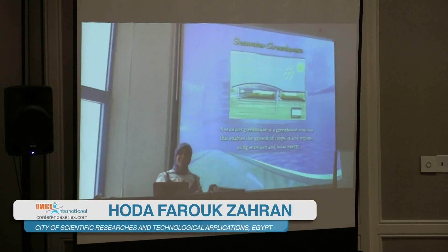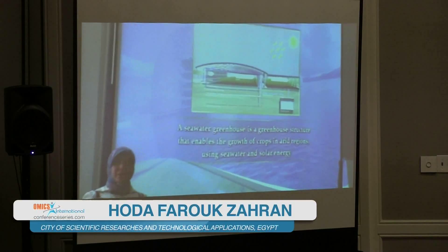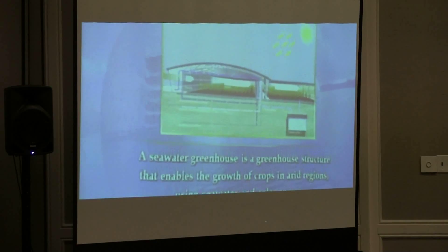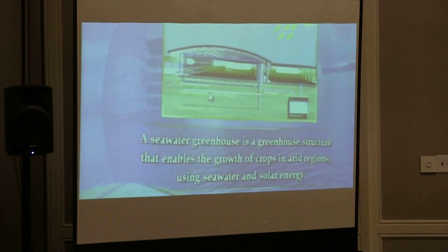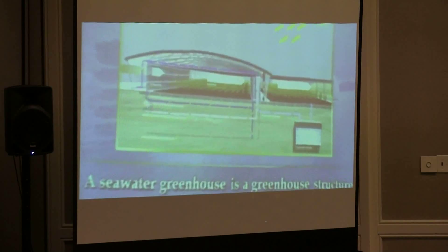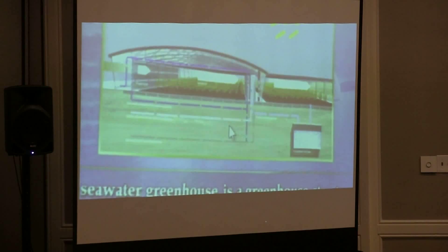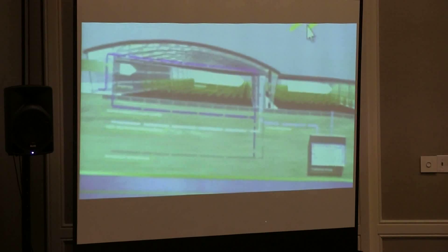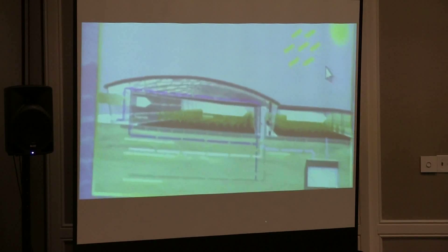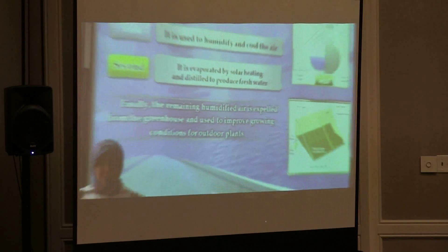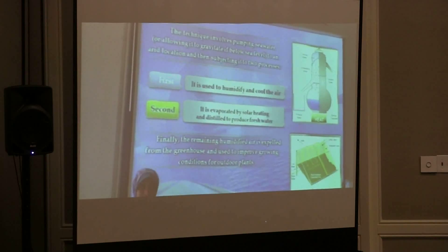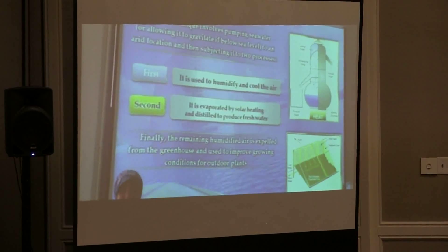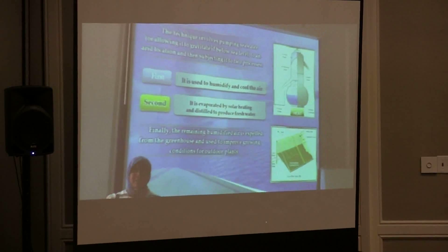We can use a greenhouse. You can see through this schematic diagram these pipes, which carry pumping sea water from the sea to the air location. We can use solar energy in this manner. By two steps: first, it is used to humidify and cool the air. Second, it is evaporated by solar heating and destined to get fresh water.